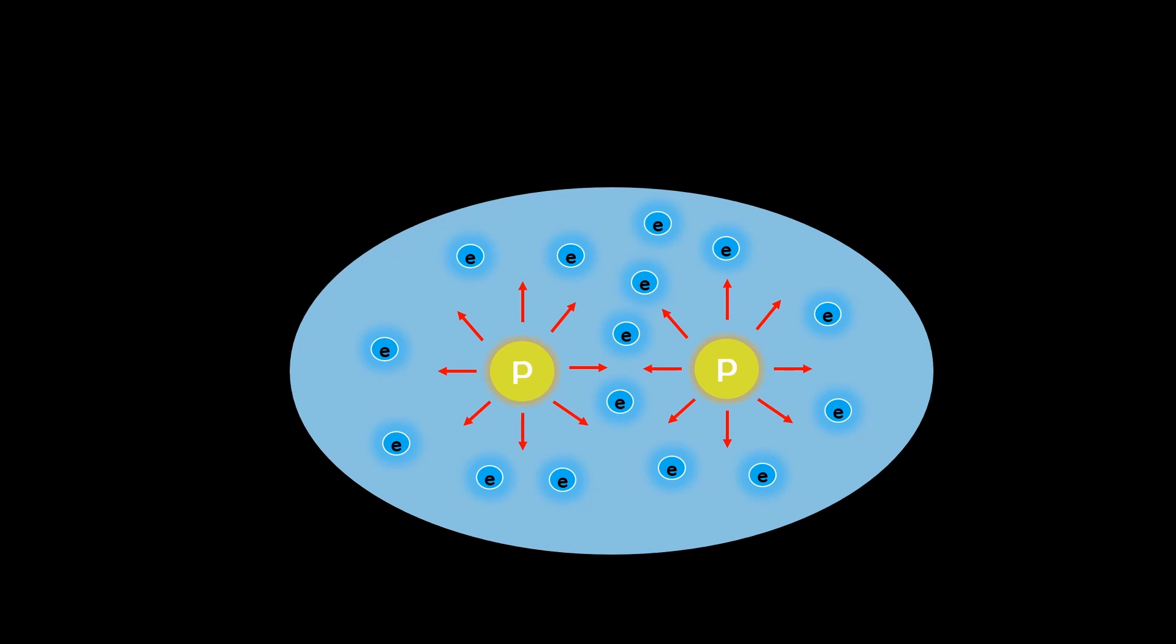This overlap creates a molecular orbital with increased electron density between the two nuclei, which further stabilizes the bond because each positive nucleus has more negative electrons to now interact with.